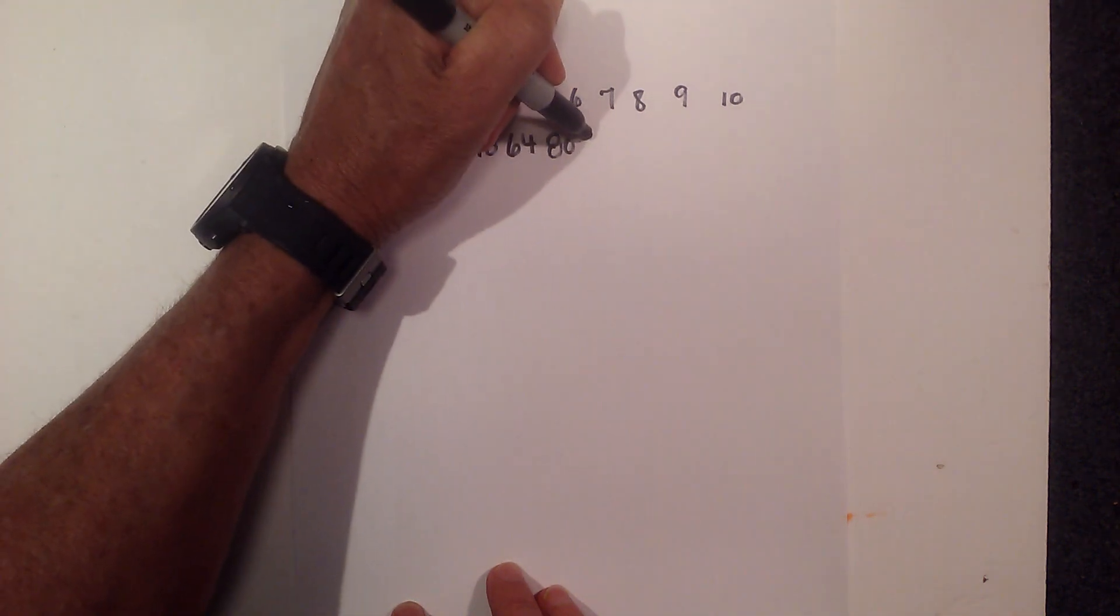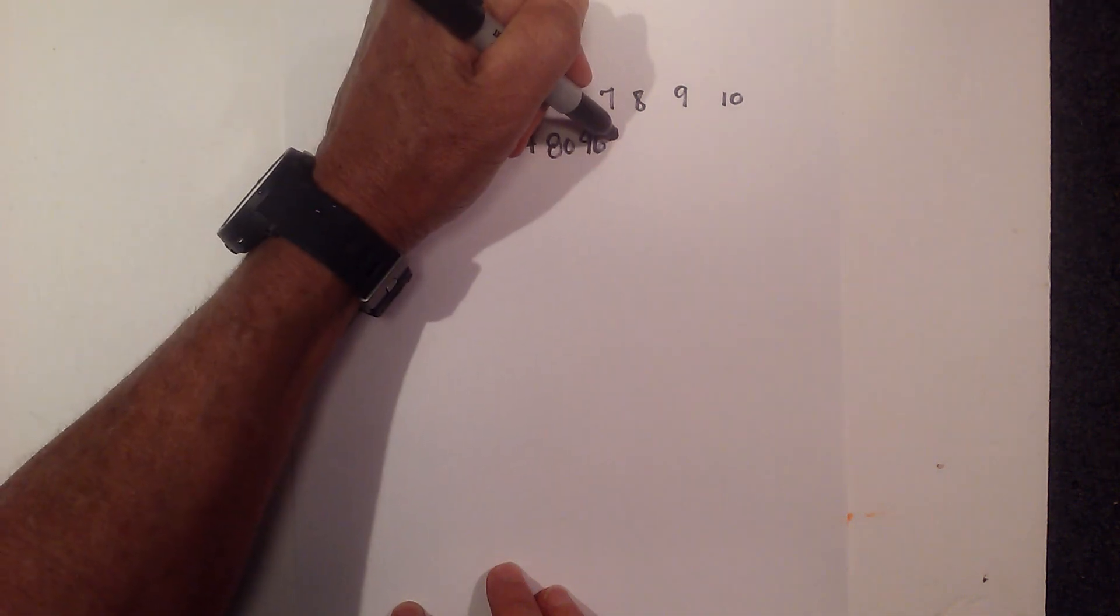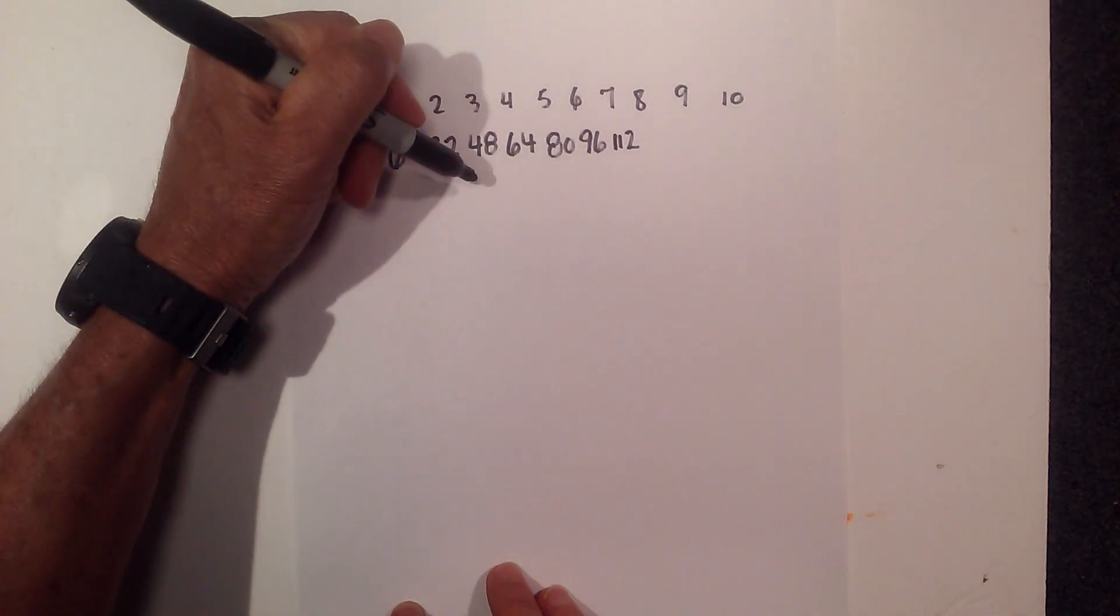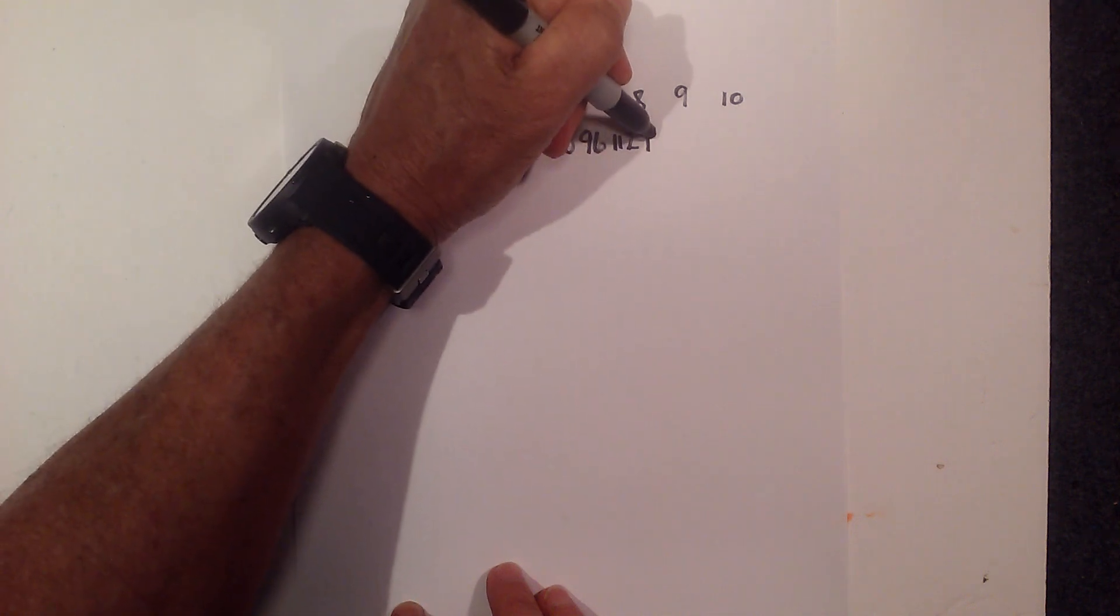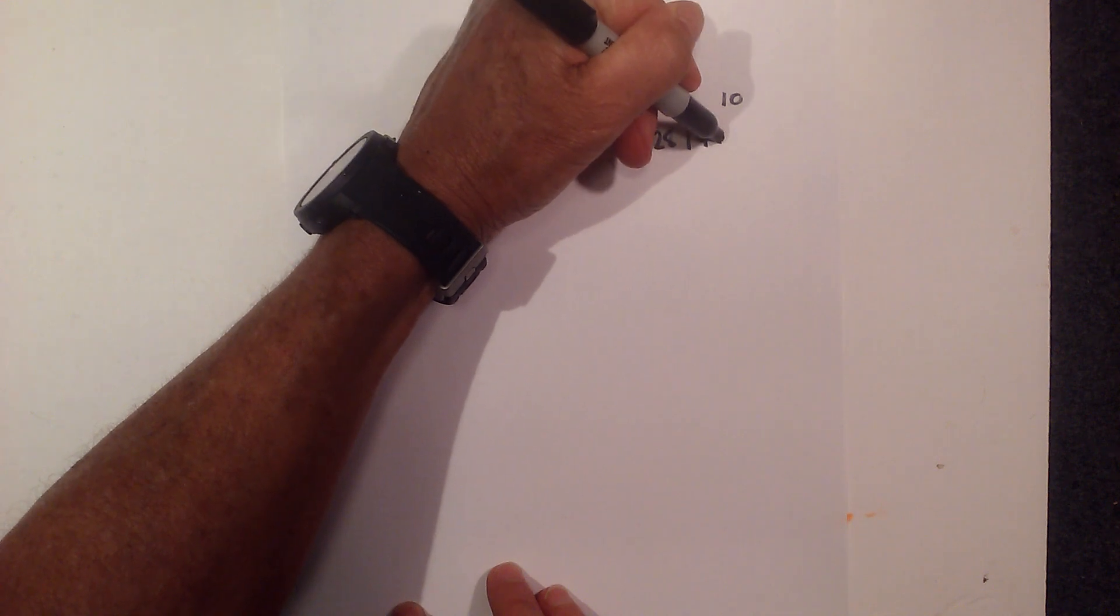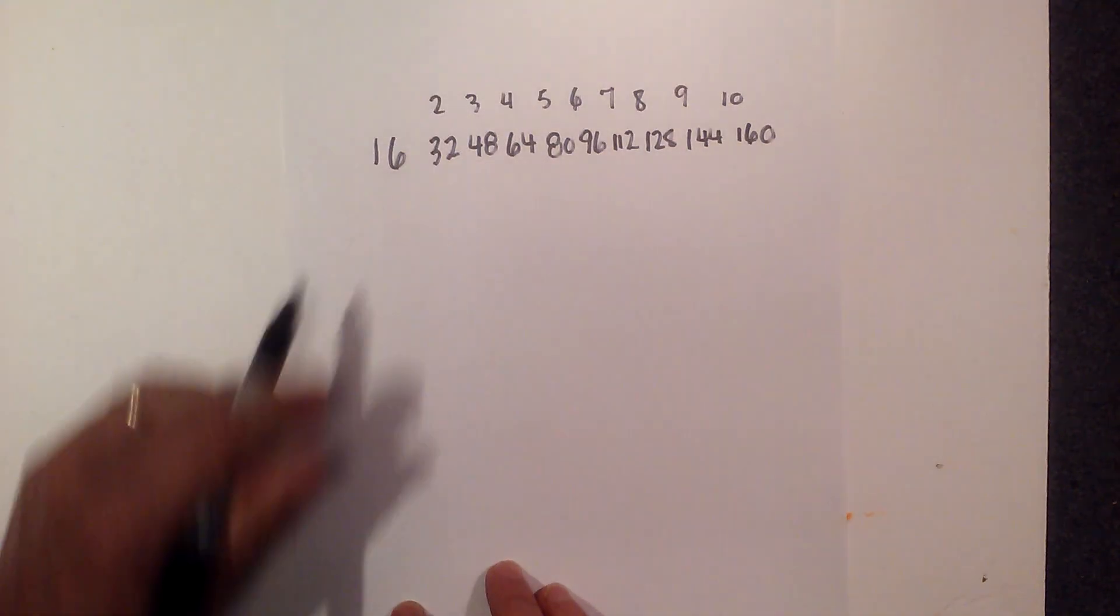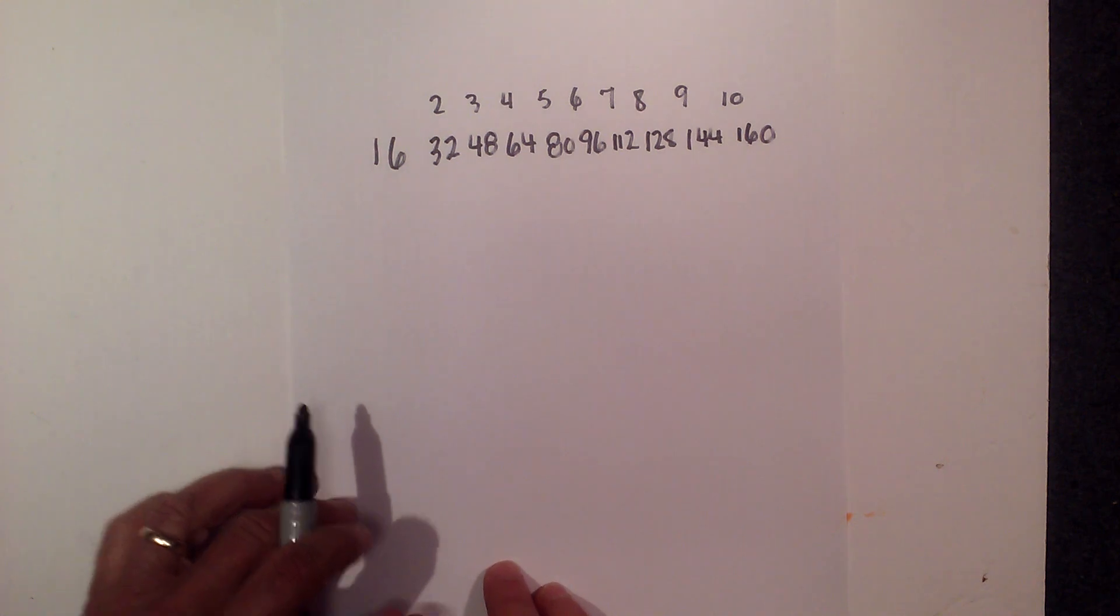16 times 6 is 96, 16 times 7 is 112, 16 times 8 is 128.